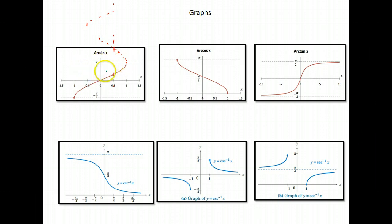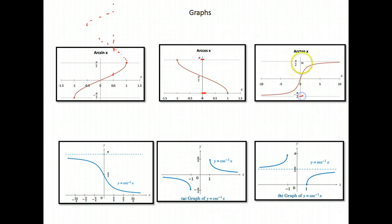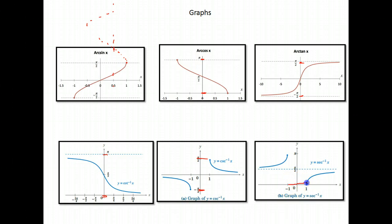To fix that problem, they put restraints on the range. For sine, the range goes from negative pi over 2 to pi over 2, and then we have a function with nothing repeated. For cosine, y goes from 0 to pi. Tangent is from negative pi over 2 to pi over 2. Cotangent, like cosine, is from 0 to pi. Cosecant, like sine and tangent, is from negative pi over 2 to pi over 2.